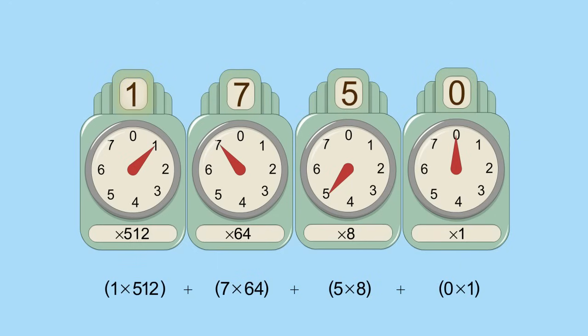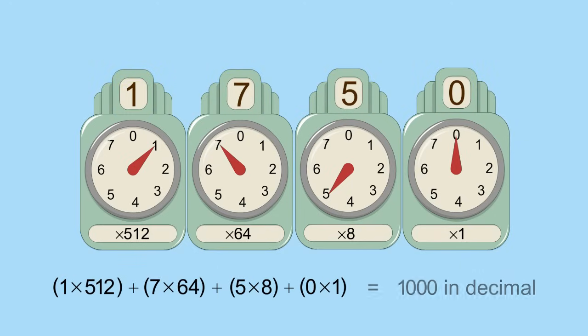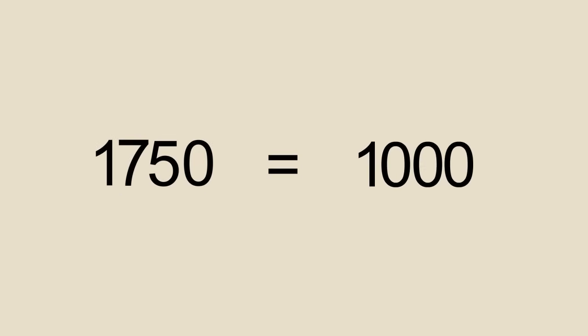which adds up to the quantity which in decimal is called one thousand. You may sometimes see a small subscript eight or ten after an octal or decimal number, in case there may be some confusion about which base is being used.